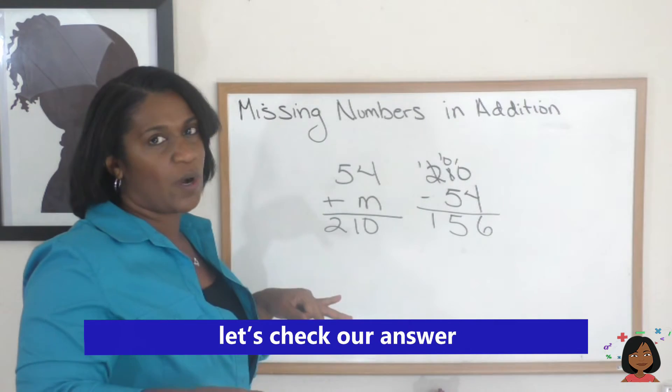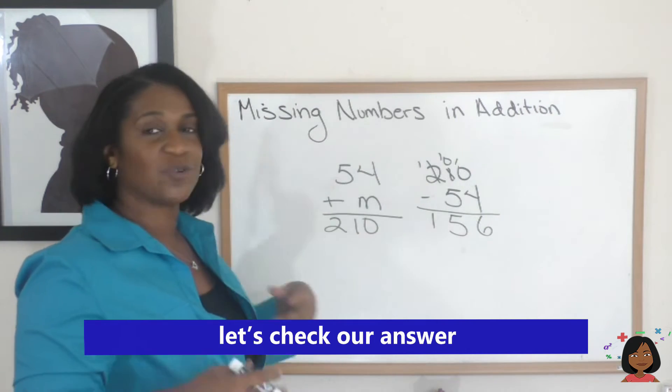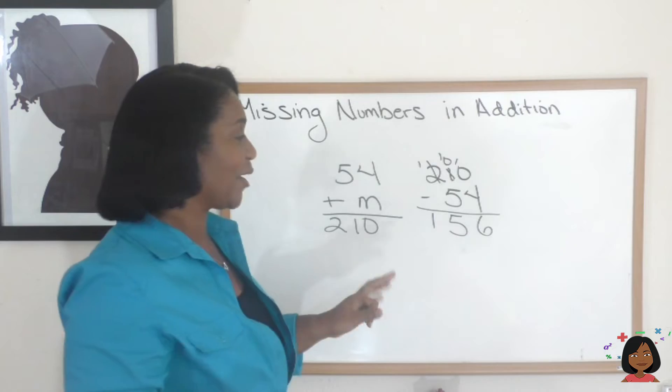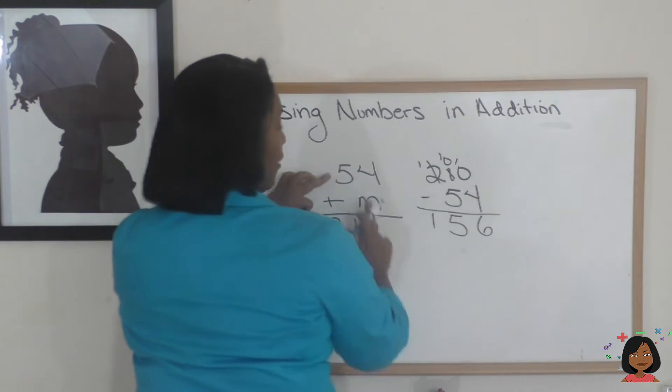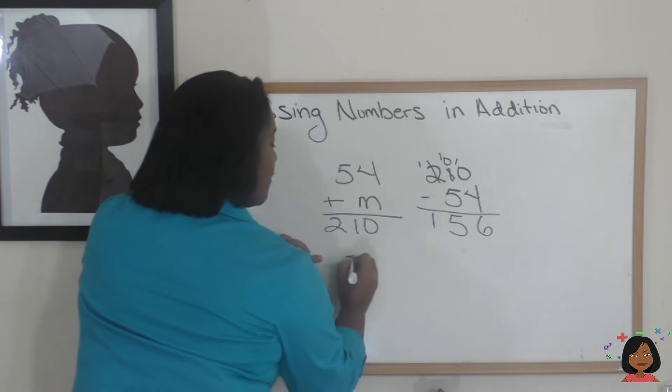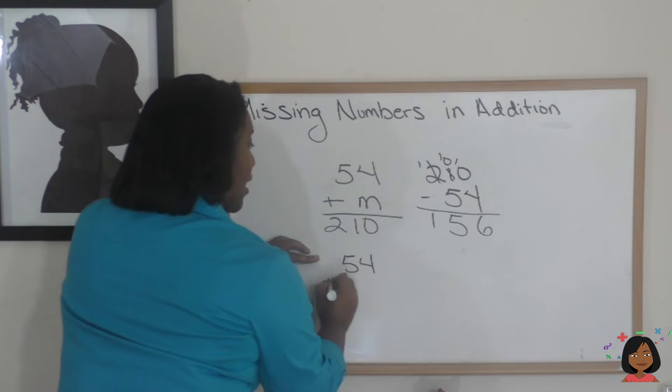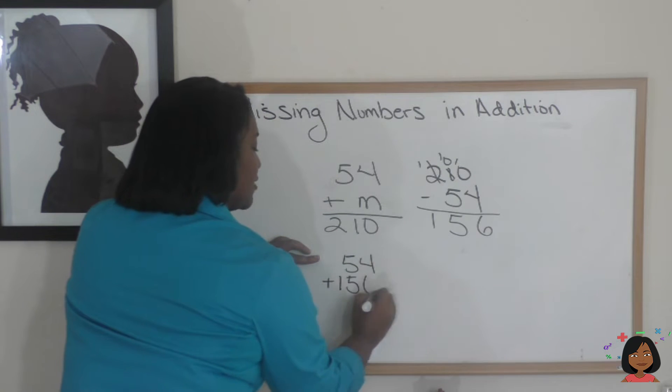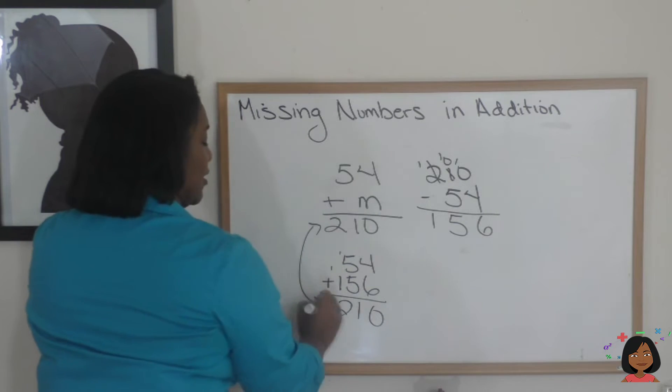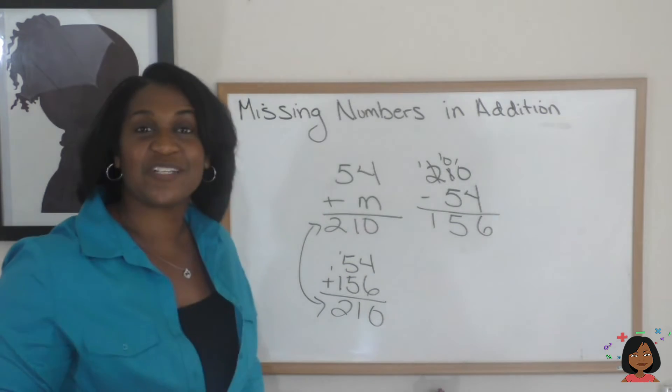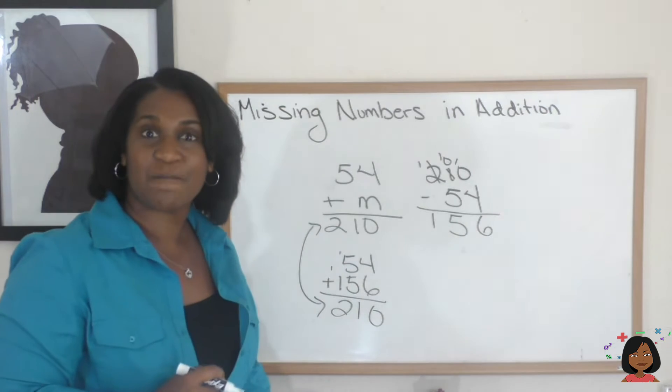Well, let's check it and make sure, because we know with subtraction we have a built-in answer checker. So, let's go ahead and add 156 and 54. I'm going to do it like it's done here. 54 plus 156. 6 and 4 is 10. 5 and 5 is 10, and 1 is 11. And 1 and 1 is 2. And looky here.